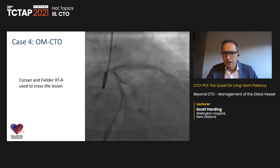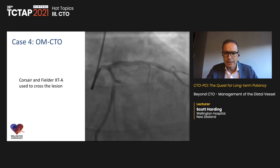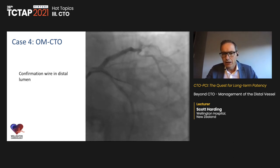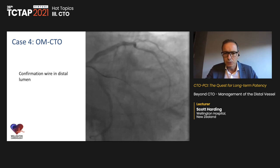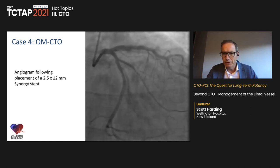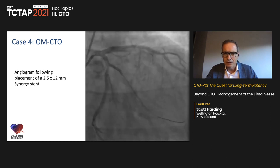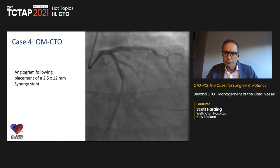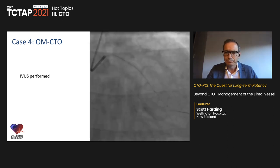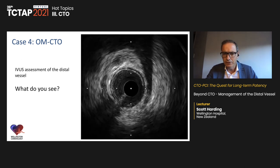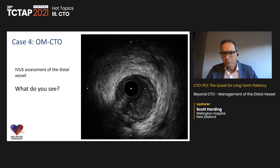Another case: a CTO of the OM1 crossed easily with a Corsair and Fielder XTA. A short 2.5 x 12mm stent was placed. On OCT of the distal vessel, in the distal portion there is normal tissue with no atherosclerotic disease. Moving proximally there is some atherosclerotic disease, and further up the OCT catheter is actually in a sub-intimal space with the true lumen between 3 and 6 o'clock, then re-entering the true lumen.